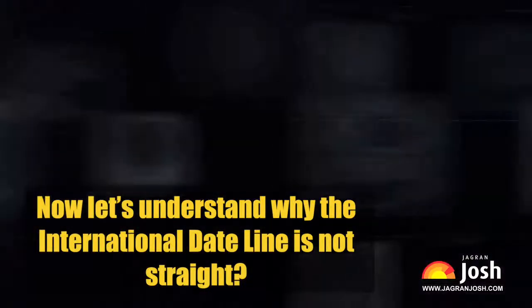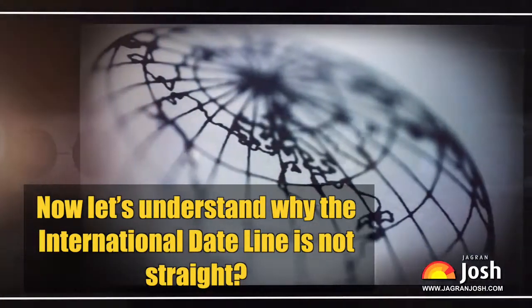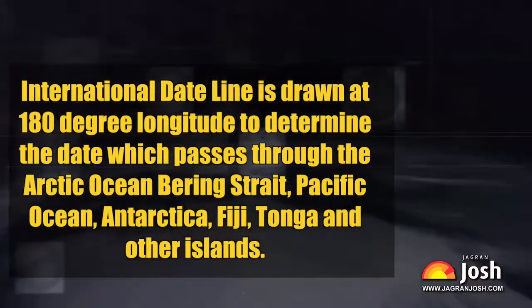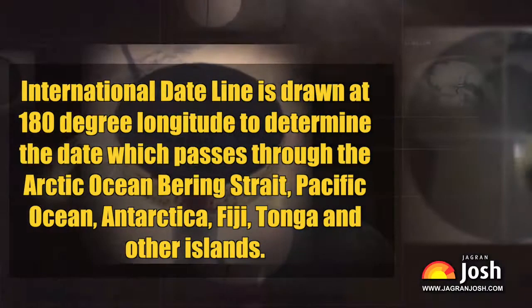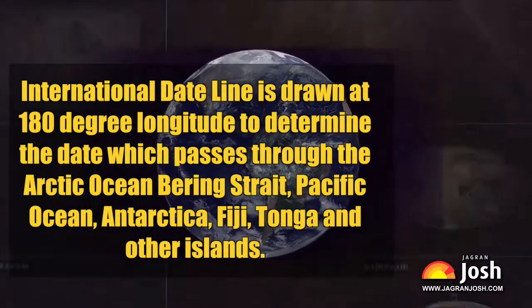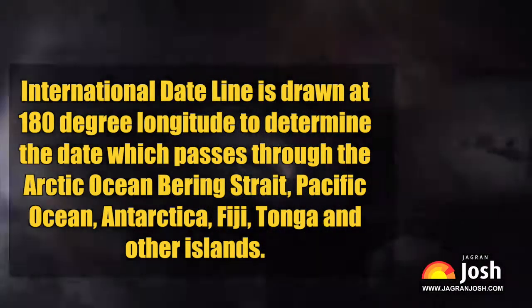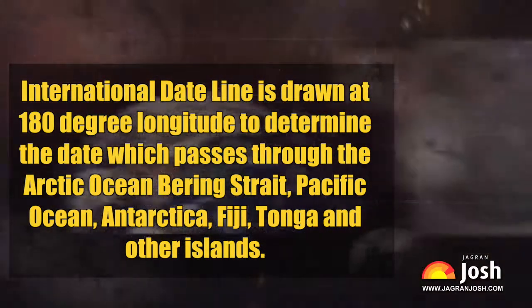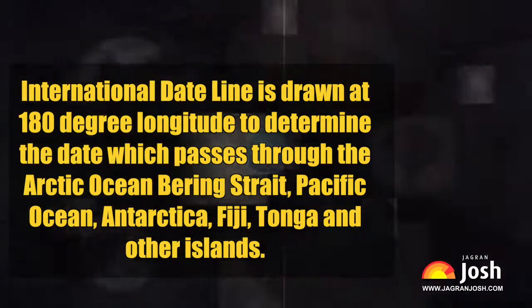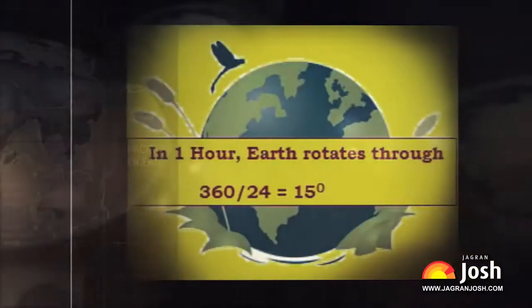Now, let's understand why the international date line is not straight. The international date line is drawn at 180 degrees of longitude to determine the date. It passes through the Arctic Ocean, Bering Strait, Pacific Ocean, Antarctica, Fiji, Tonga, and other islands. If we look at this imaginary line, we find that it is not straight but a zig-zag line.